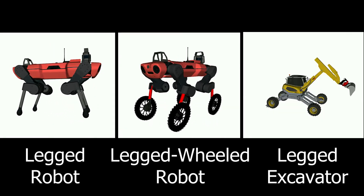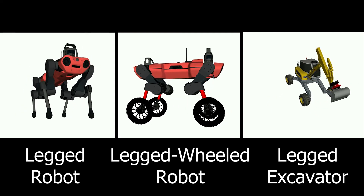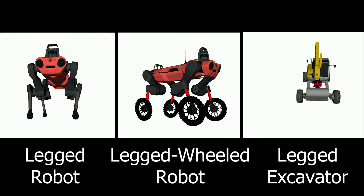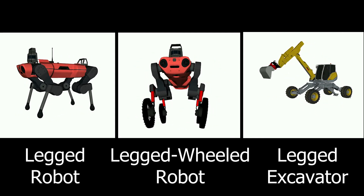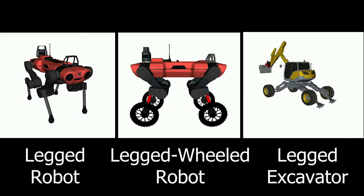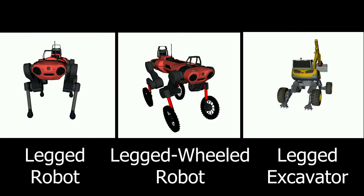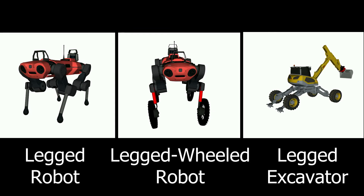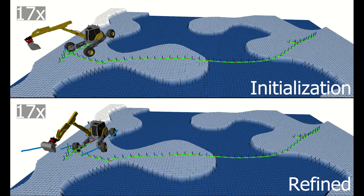To showcase the generality of our approach we compute motion plans for three different systems: a legged quadruped robot with point feet, a legged wheeled quadruped robot, and a legged excavator. A legged excavator is a machine with an arm and four legs, and in addition each leg has a wheel.